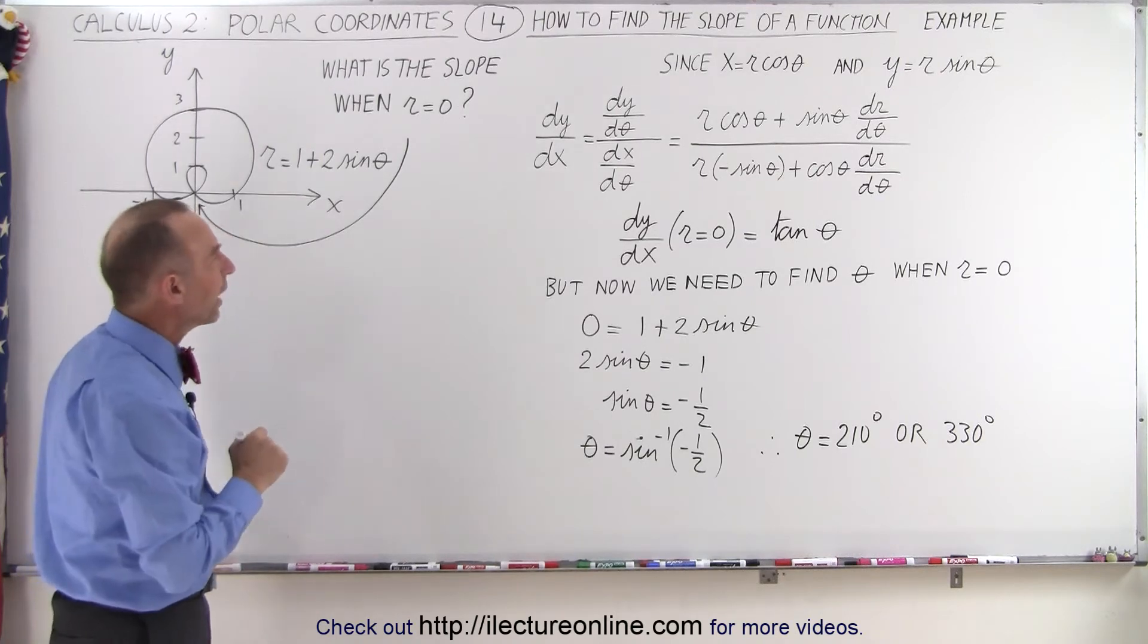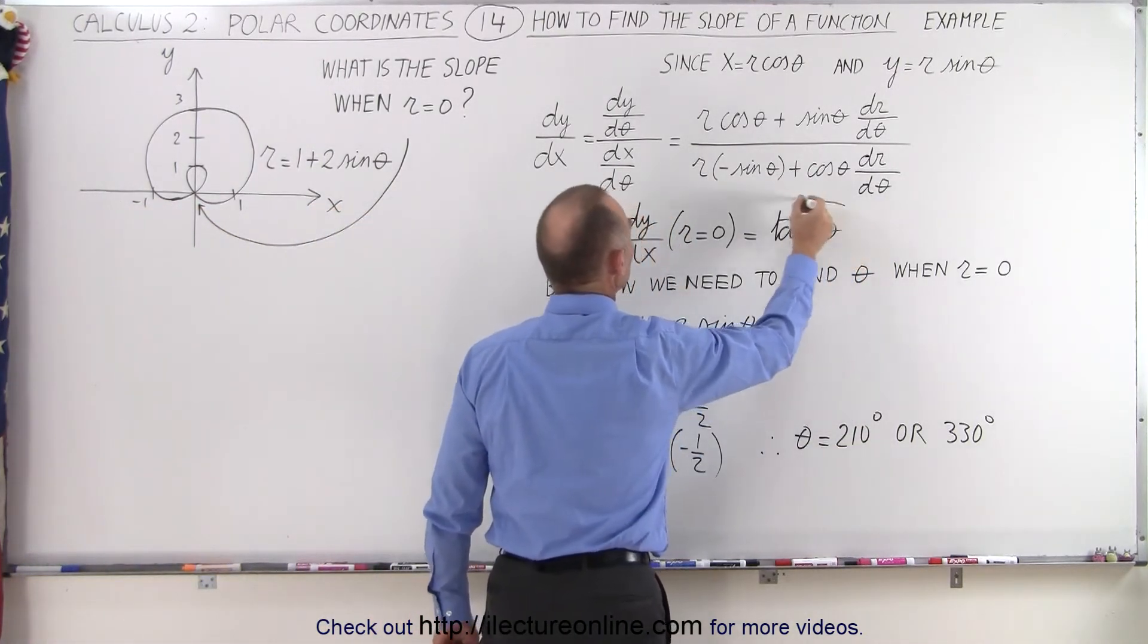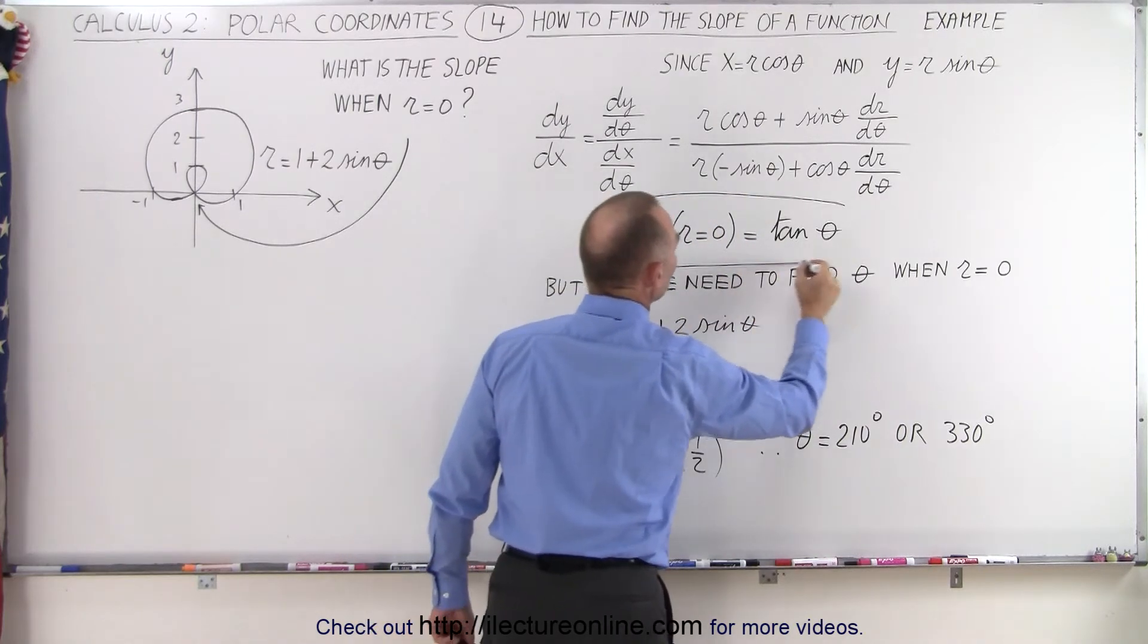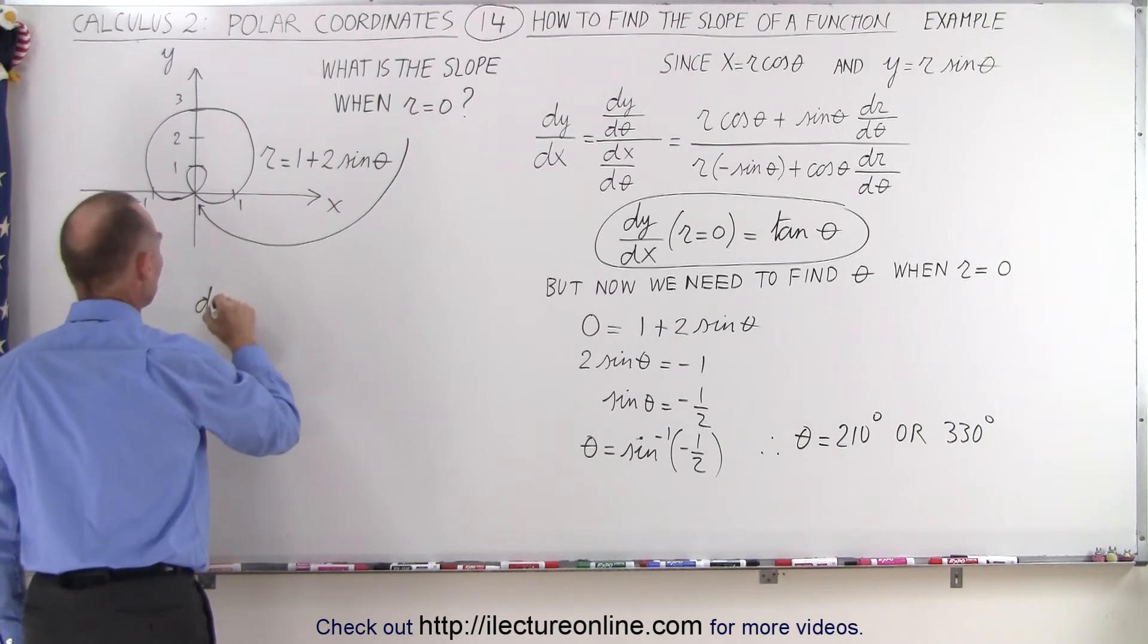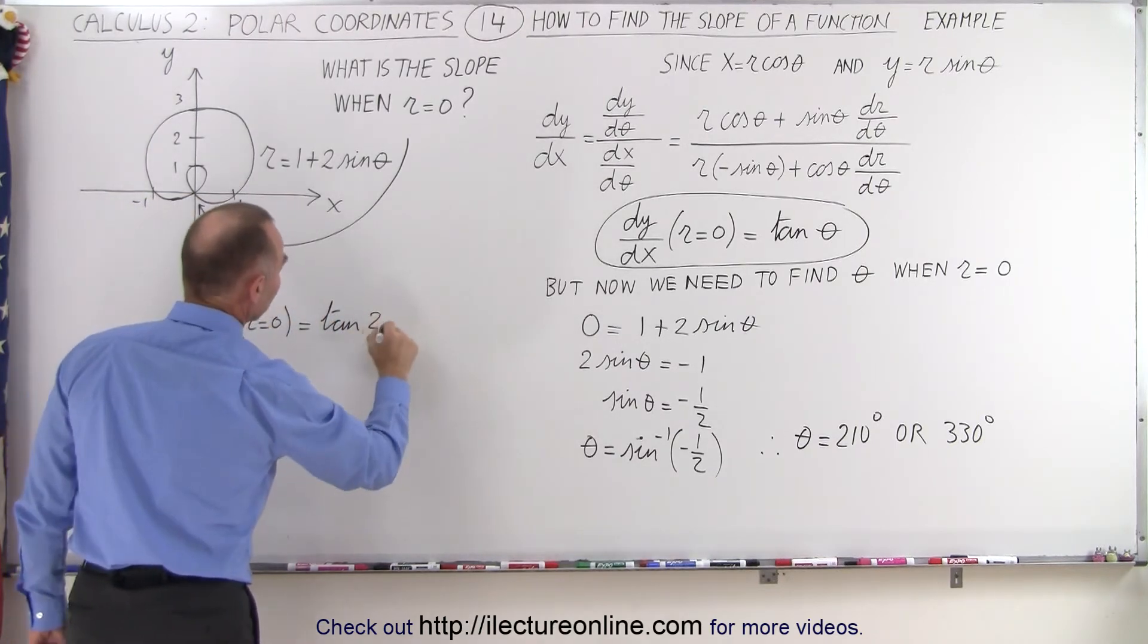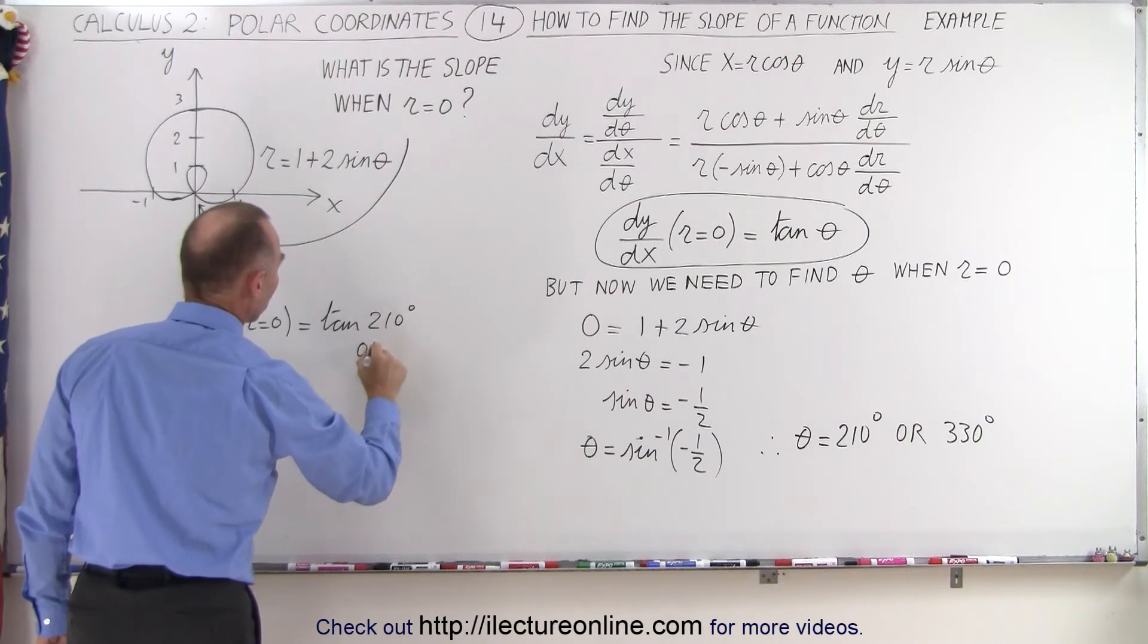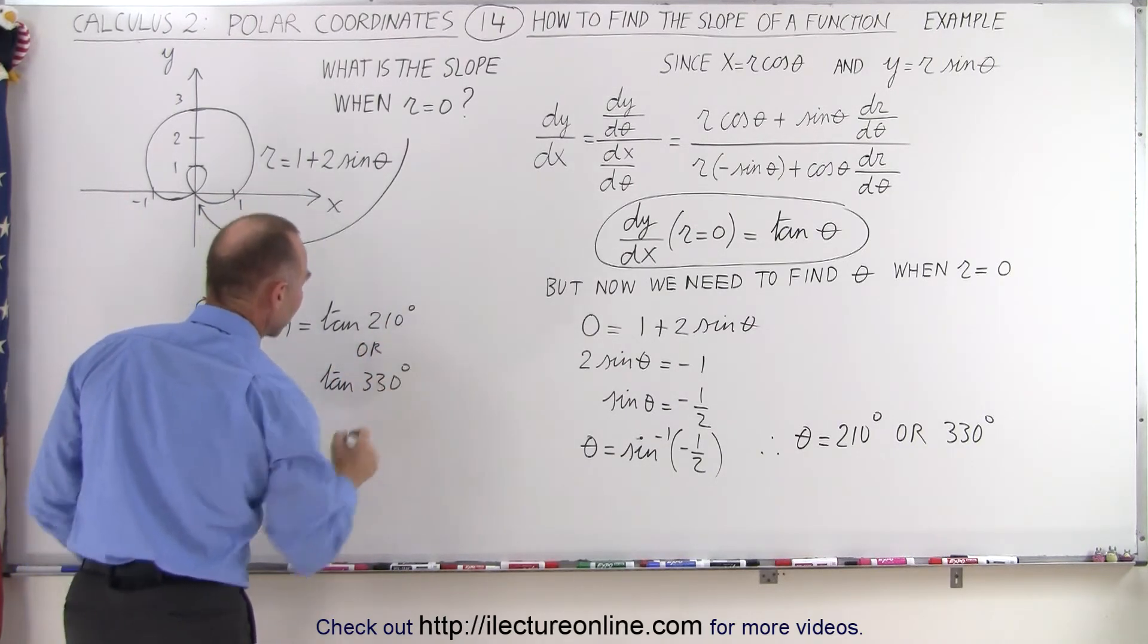So now that we know that, we can now go back and plug those two values into our general equation that we found for the slope of the function when r is equal to 0. So now we can say that dy/dx when r is equal to 0 is equal to the tangent of 210 degrees or the tangent of 330 degrees.